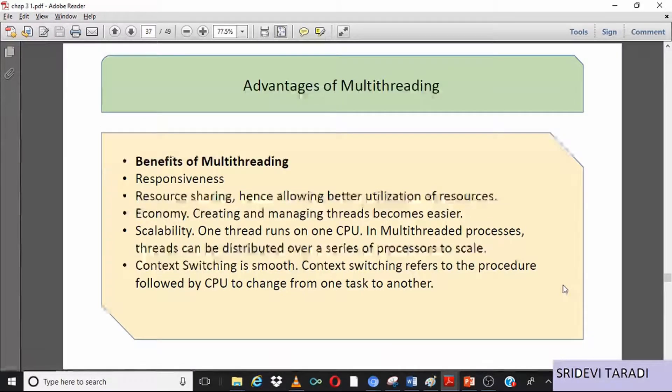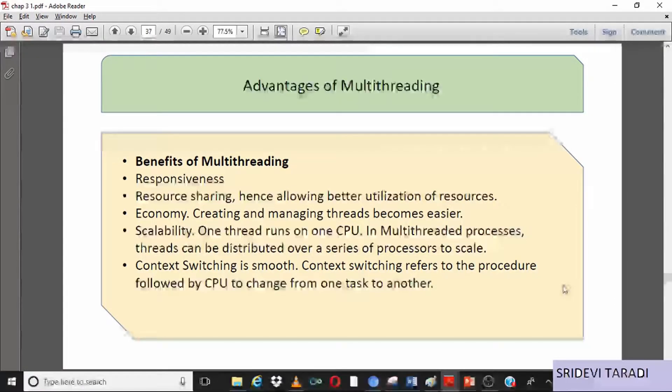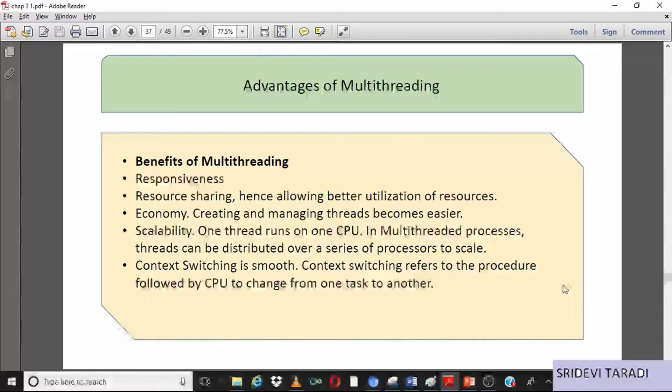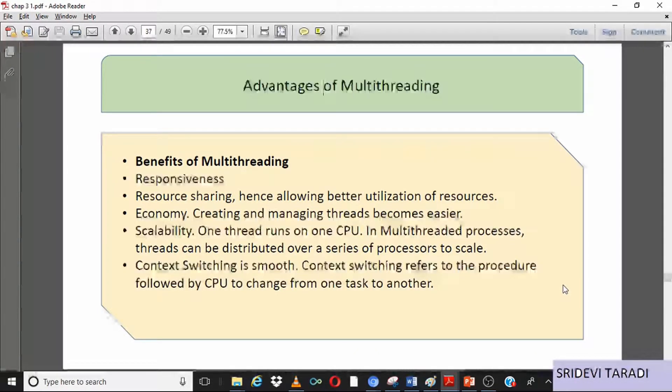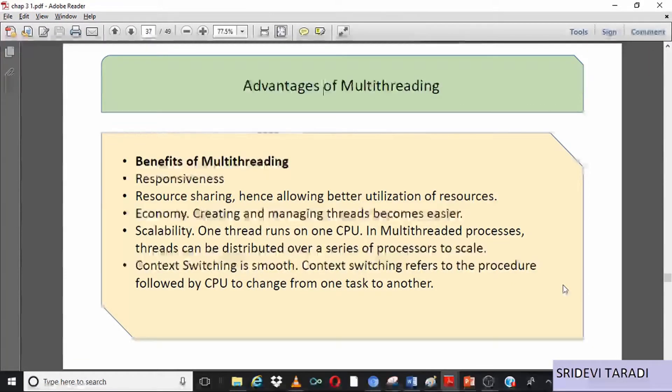It enhances scalability because in multi-threaded processes, threads can be distributed over a series of processors to scale. Context switching is smooth. It refers to the procedure followed by the CPU to change from one process to another.